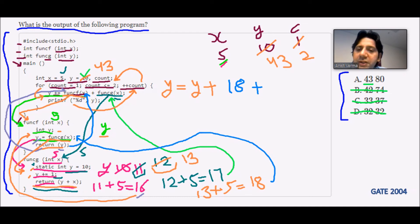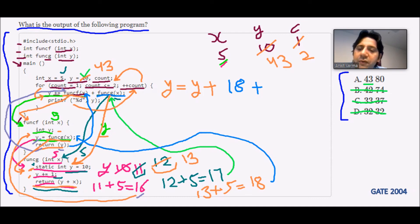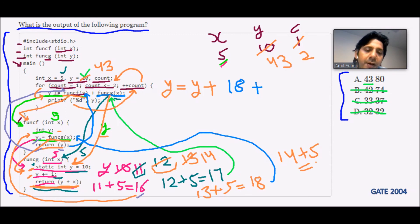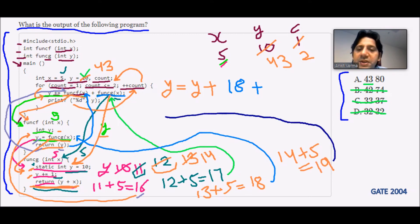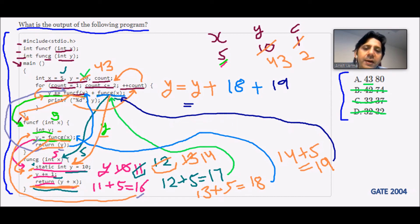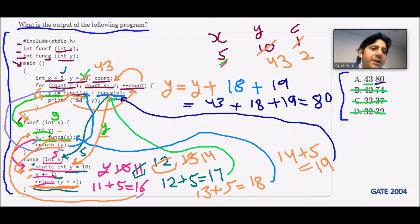Then func_g(x) is called again with x = 5. Static y is now 13, so y += 1 gives y = 14. Return y + x = 14 + 5 = 19. So the total is y += 18 + 19. With y = 43 earlier: 43 + 18 + 19 = 80.